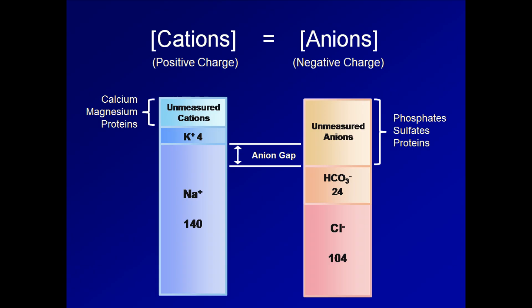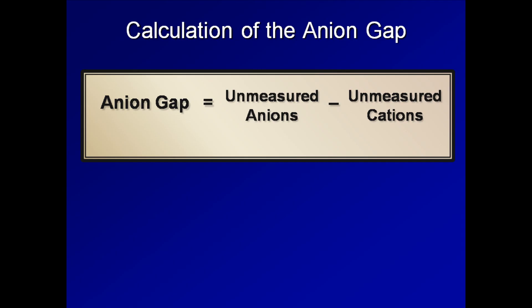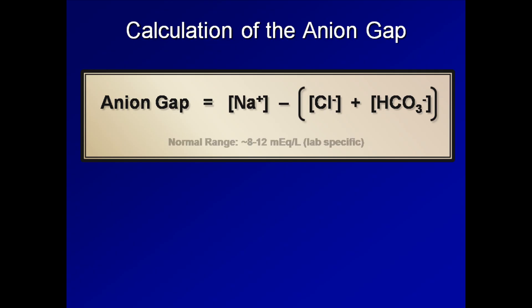Mathematically, we can say that the anion gap is equal to the unmeasured anions minus the unmeasured cations, including potassium. This is equivalent to sodium minus the sum of chloride and bicarbonate. The normal range for the anion gap is approximately 8 to 12 milliequivalents per liter, but is lab specific, and you should really check with your own lab for its normal range before drawing conclusions about a patient's acid-base status. For purposes of the remaining lectures in this course, I will assume that the upper limit of normal is 12.